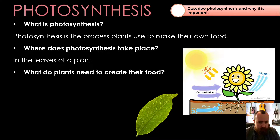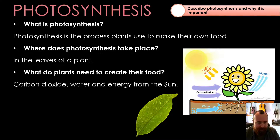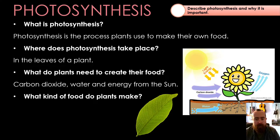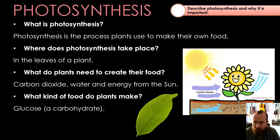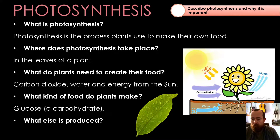Plants need a few things to create their food. What are they? Carbon dioxide, water, and they need some energy from the sun — some light energy coming in from the sun. What kind of food do plants make for themselves? They make glucose. Glucose is a carbohydrate — one of the four food groups you need to know about. It's a simple carbohydrate. And what else is produced? There's one other thing that gets produced when plants do photosynthesis.